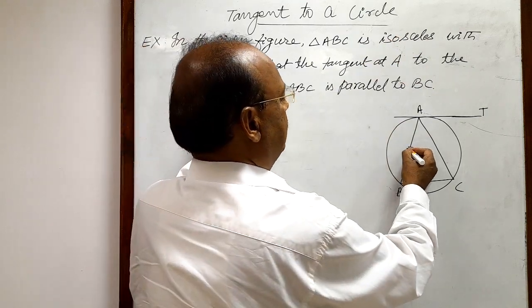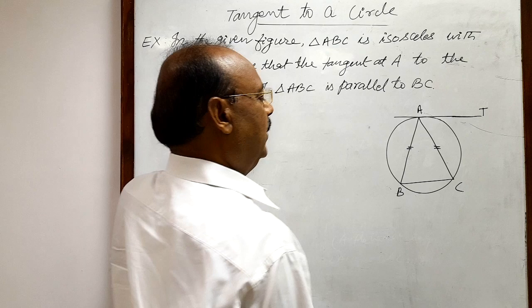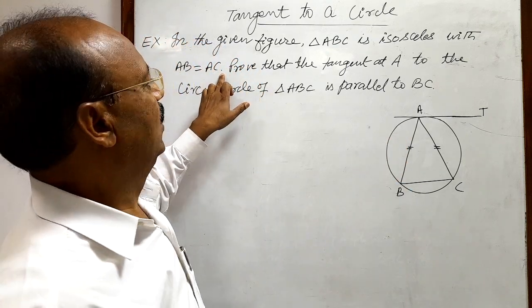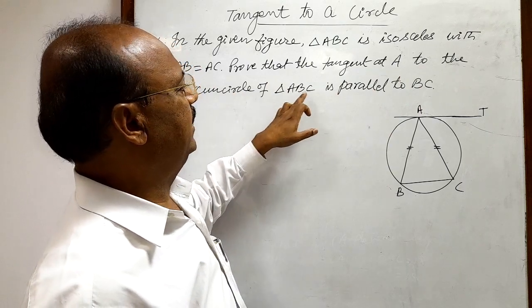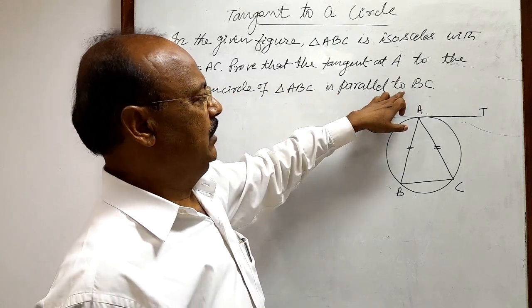These two sides AB and AC are equal in triangle ABC. Prove that the tangent at A to the circumcircle of triangle ABC is parallel to BC.